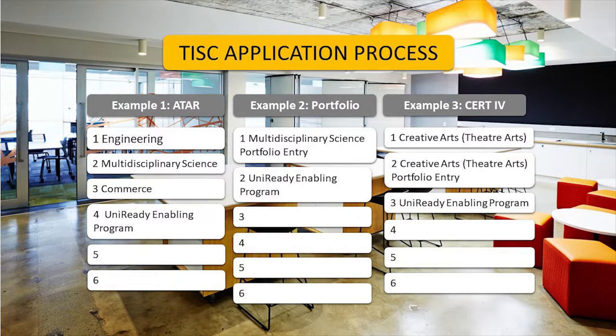When you start your TISC application, after some personal questions you'll get to a point where you have to fill out the courses you're interested in applying for. List your preferences in order of what you want the most — from one to six, with one being the course you want most at the university you want most. You don't have to fill out all six slots, but we'd recommend at least two or three to keep your options open. For example, if engineering is your number one preference, you'd put that first, then multidisciplinary science as a backup, then commerce third, with the enabling program as the last preference in case you don't get the ATAR you need.